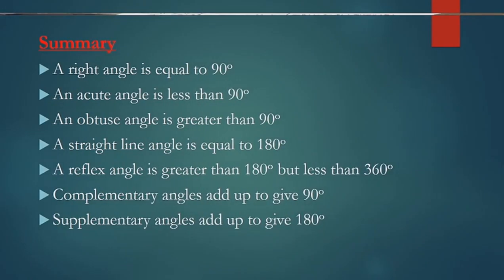In summary, a right angle is equal to 90 degrees. An acute angle is less than 90 degrees. An obtuse angle is greater than 90 degrees. A straight line angle is equal to 180 degrees. A reflex angle is greater than 180 degrees but less than 360 degrees.